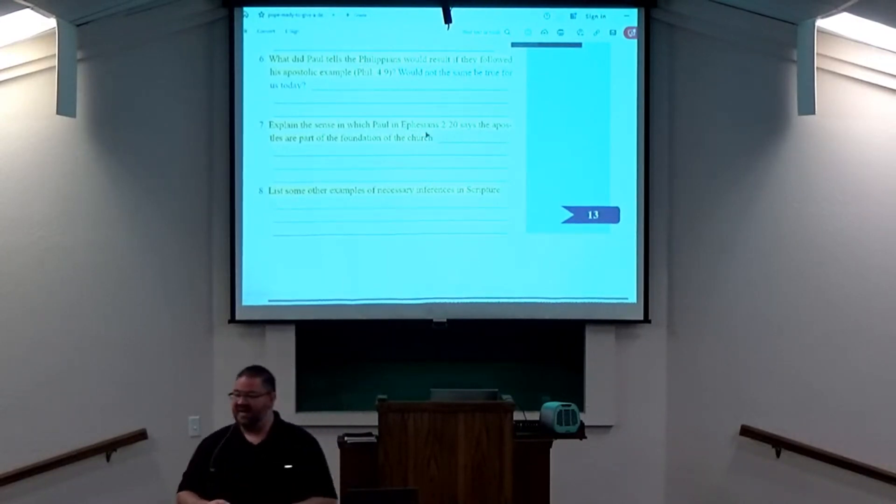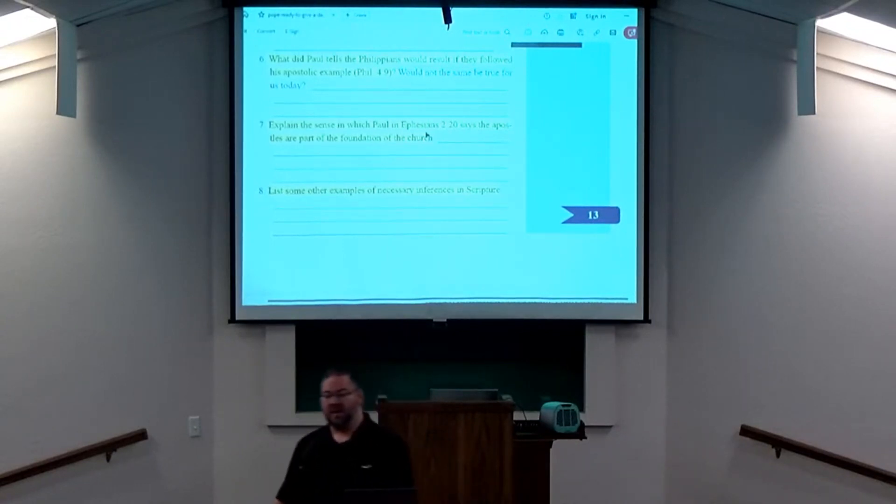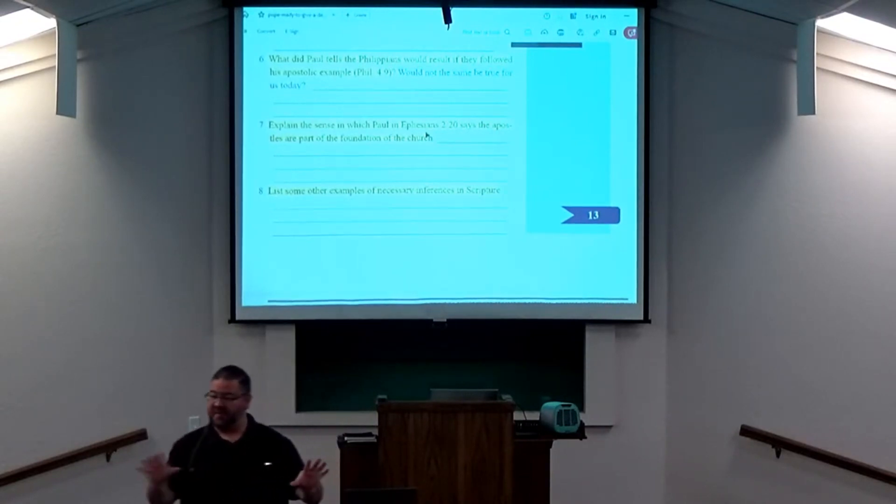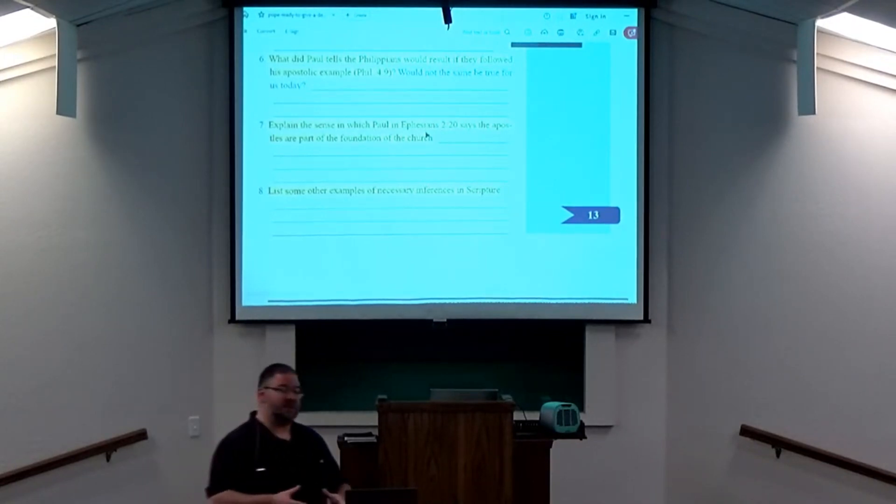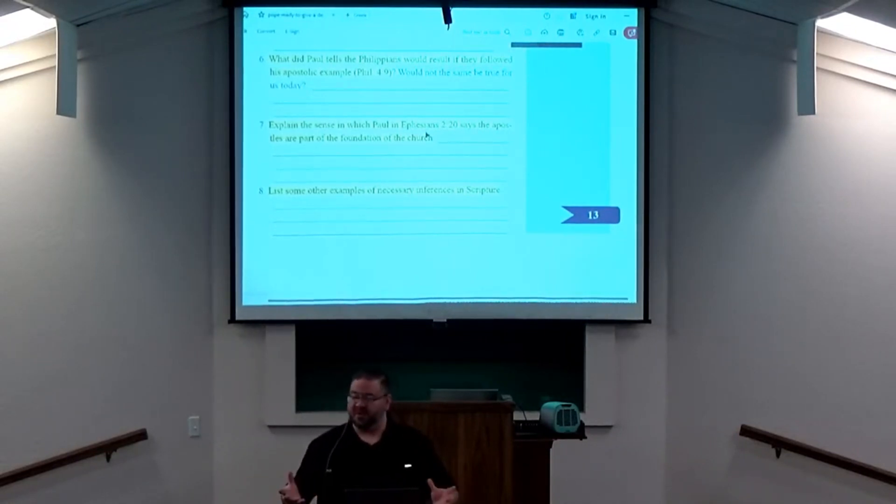Which leads us directly to question 8: List some of the other examples of necessary inference in Scripture. Song books in order to sing. Expedients are a necessary inference. The definition of expedient is anything that neither adds to nor takes away, but simply assists in the fulfilling of a commandment by God. Song books are one example of an expedient.